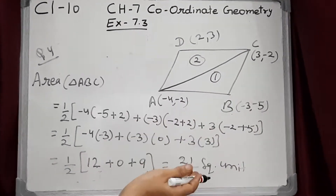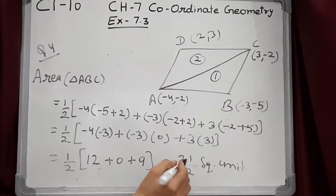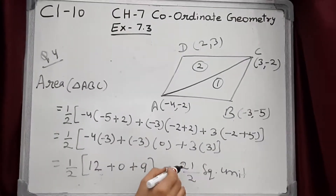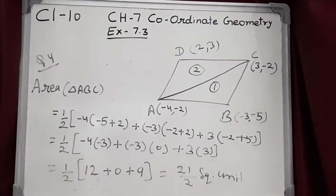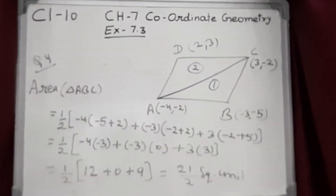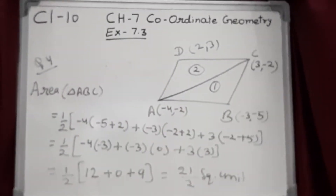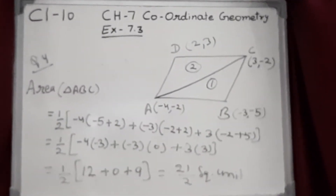After putting the formula values and solving, we get 21 upon 2 square units. So the area of triangle ABC is 21/2 square units.